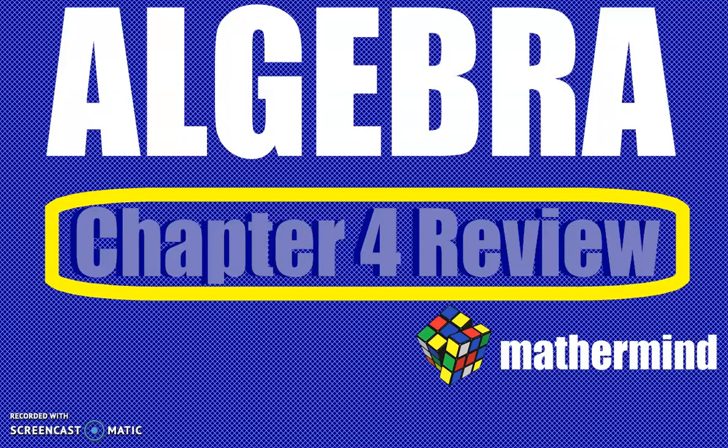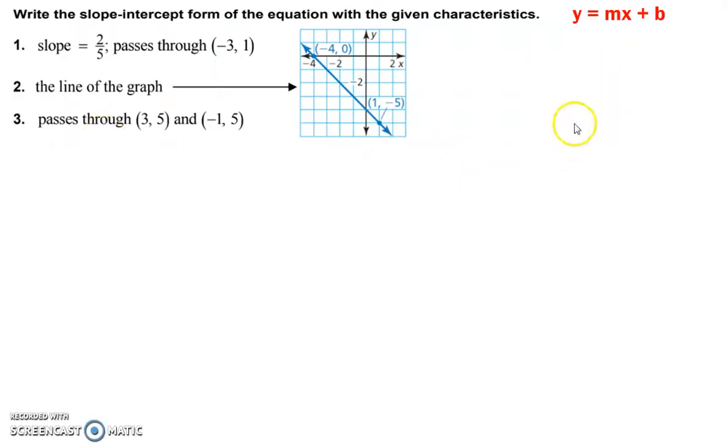Alright, Algebra Chapter 4 review, let's go. If you've mastered how to find the slope and b, the y-intercept, then you've pretty much mastered most of this test. Alright, put this in slope-intercept form. That's y equals mx plus b.